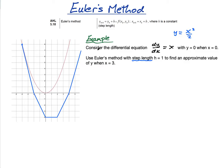Now imagine doing it with a step length of 1. The gradient starts at −4, but only for one step. Then the gradient is −3, then −2, then −1, then 0, then 1, then 2, then 3, then 4. Because the step length was smaller, the approximation is better. This is actually how your calculator does a lot of its calculations — it uses smaller and smaller step lengths, getting closer and closer to the actual curve.